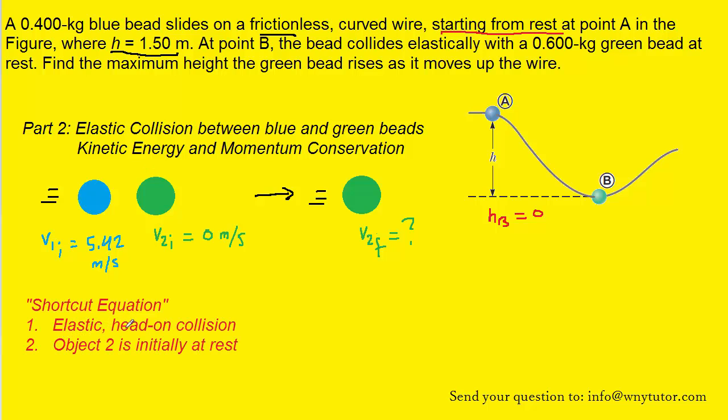Whenever you have an elastic head-on collision and object two, which in this case is the green bead, is initially at rest, then the following equation can be used to calculate the final speed of object two after the collision.